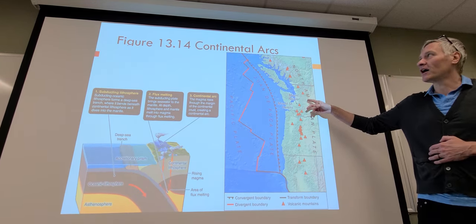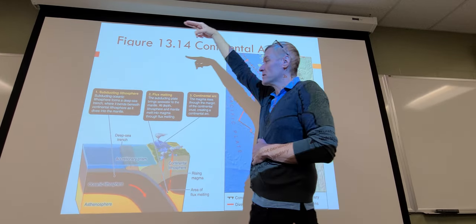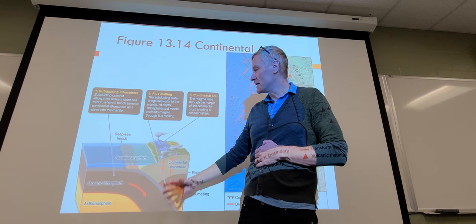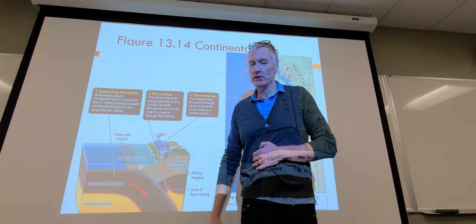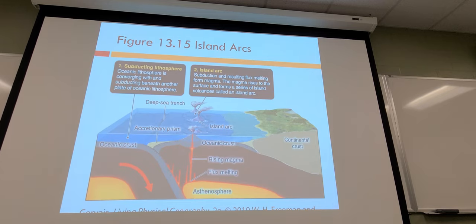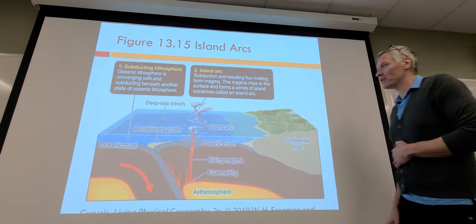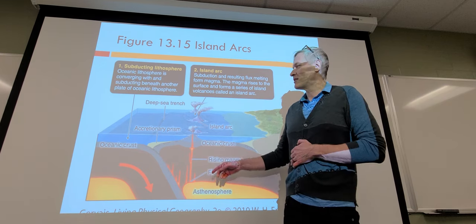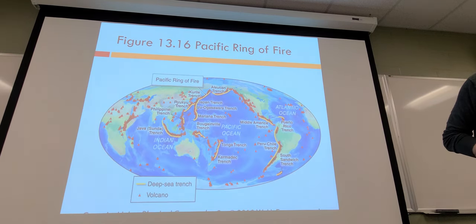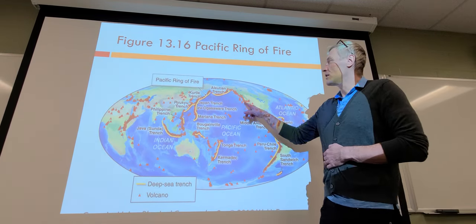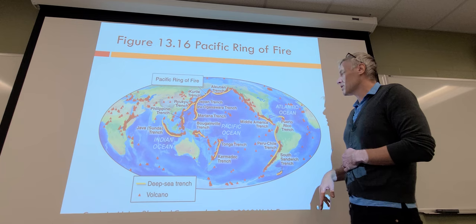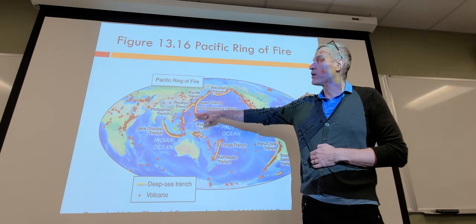When volcanoes aren't hot spot volcanoes, they run along the whole boundary where plates are coming together — those are continental arcs. A good example is Washington State, which continues up into Alaska, where the continental crust is forced under, heats up, and amounts of magma are forced upward. This extends all the way through Japan and large parts of Asia — it's all part of the Ring of Fire.